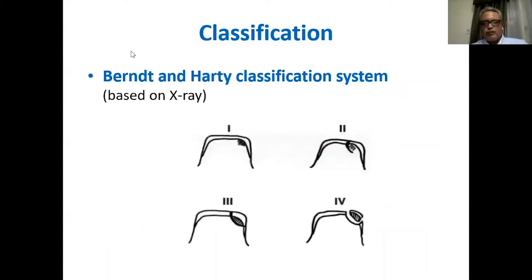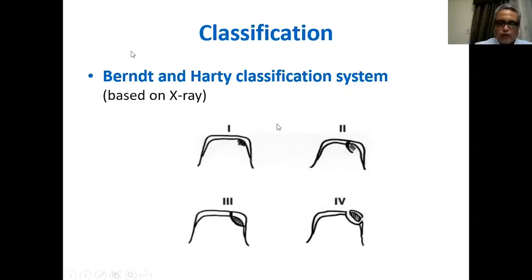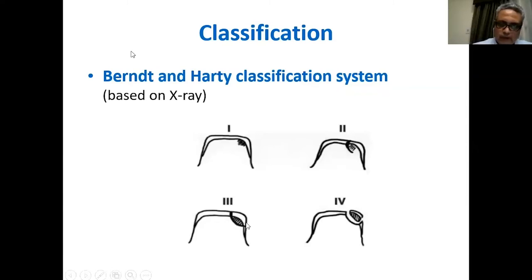For classification, there are many systems. The oldest is the Berndt-Harty classification based on X-ray findings: Type 1 is an undisplaced lesion or an area of rarefaction; Type 2 is partial separation of the osteochondral fragment; Type 3 is complete separation but kept in place; and Type 4 is a displaced osteochondral fragment.